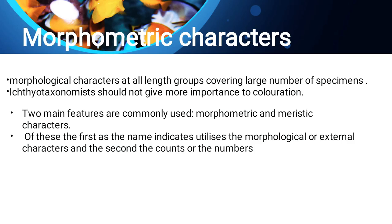The first one, morphometric character, indicates morphological or external characters. The second one, meristic character, indicates numbers — the number of gill rakers, fin rays, pectoral fins. These are all the meristic characters.